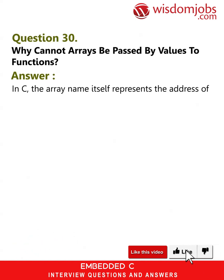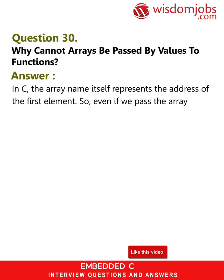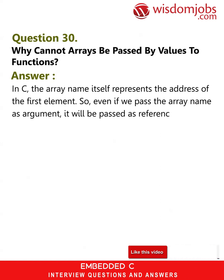Question 30: Why cannot arrays be passed by value to functions? Answer: In C, the array name itself represents the address of the first element. So even if we pass the array name as an argument, it will be passed as a reference and not by value.